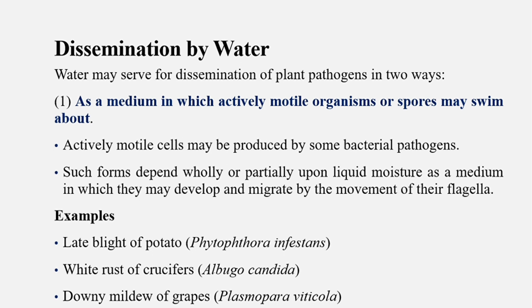Water serves for dissemination of plant pathogens in two ways. First, water is a medium in which actively motile organisms and spores may swim about. Some pathogens produce actively motile cells that depend on liquid moisture as a medium to move from one side to another.